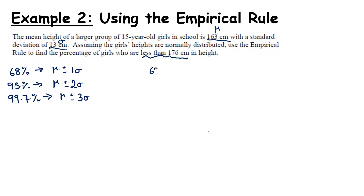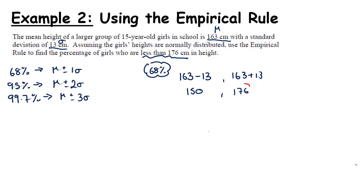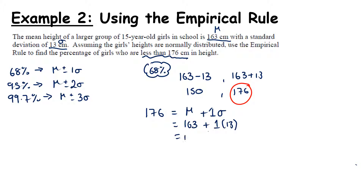Using the empirical rule we're dealing with either 68% (mu plus or minus one SD), 95% (mu plus or minus two SD), or 99.7% (mu plus or minus three SD). By trial and error, trying 68%: 163 plus 13 gives 176, and 163 minus 13 gives 150. So 176 is mu plus one standard deviation — that is 163 plus 1 times 13.